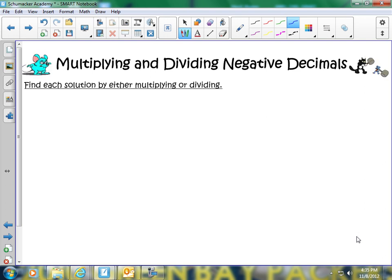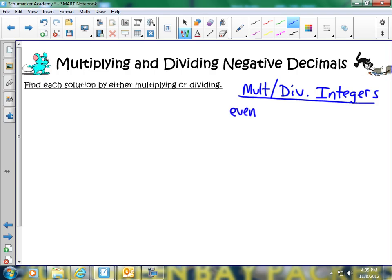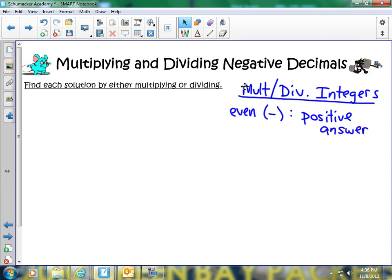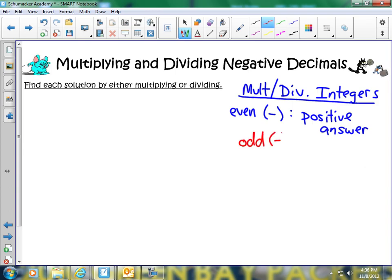When I multiply or divide integers, we're going to have this basic rule here. If I have an even amount of negative signs, I will have a positive answer. However, if I have an odd amount of negative signs, like 1, 3, 5, I'm going to end up having a negative answer.